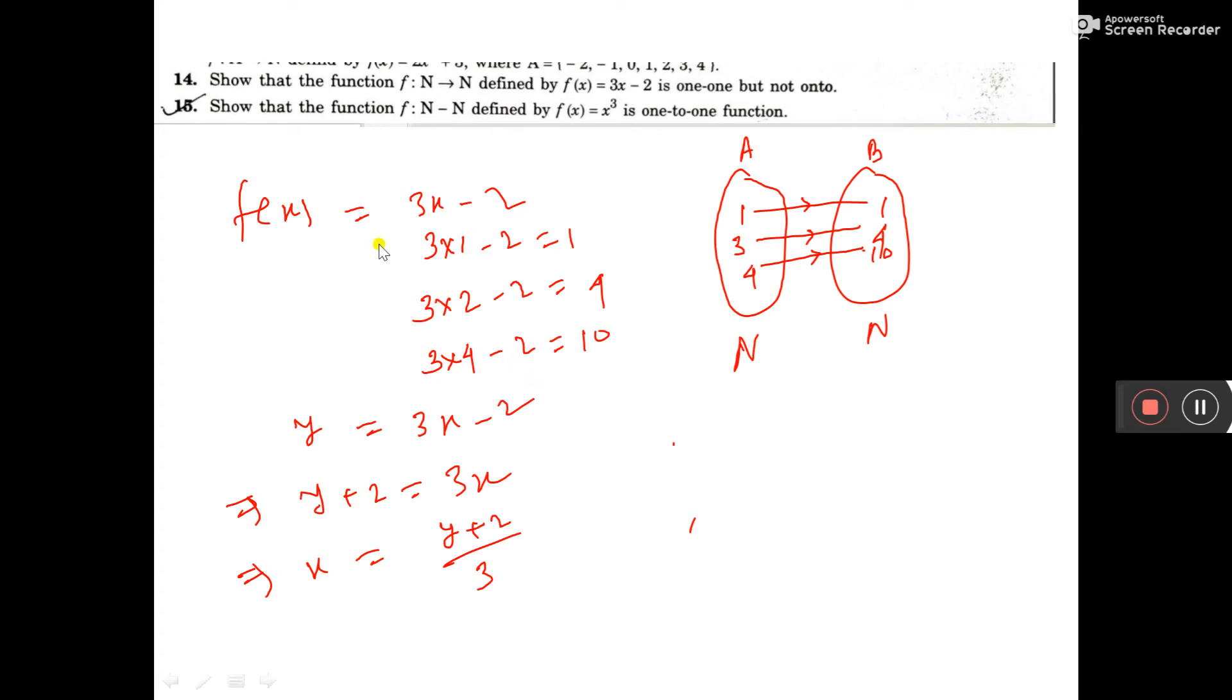Here you see this question. f(x) equals 3x minus 2, and this is N to N, natural number to natural number. If you consider the value X equals 1, you get f(x), or Y, equal to 1. So 1 corresponds to 1.